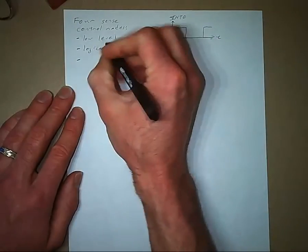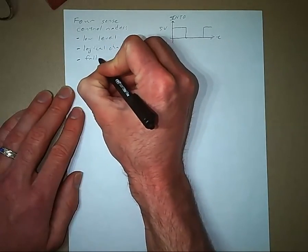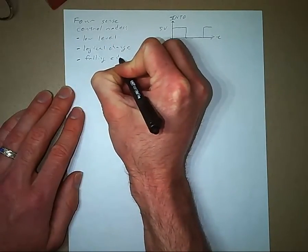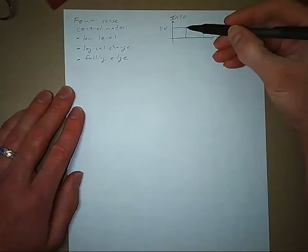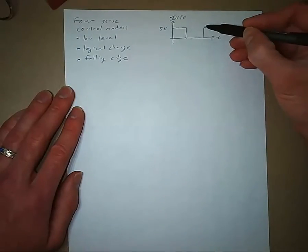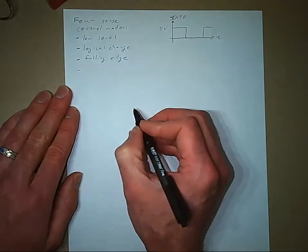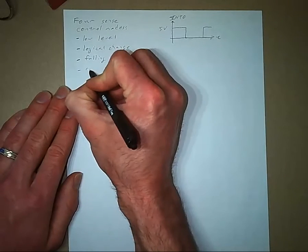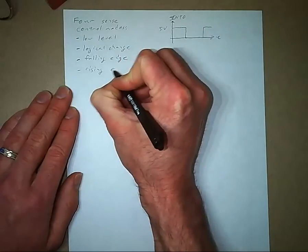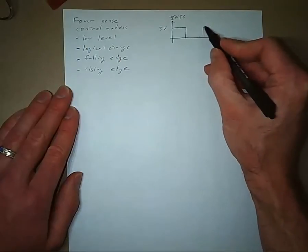The third way is falling edge. In this case, an interrupt would be generated at this cycle, but no interrupt would be generated here. And then the fourth way is rising edge. So in that case, we would generate an interrupt at this point, but not at this point.